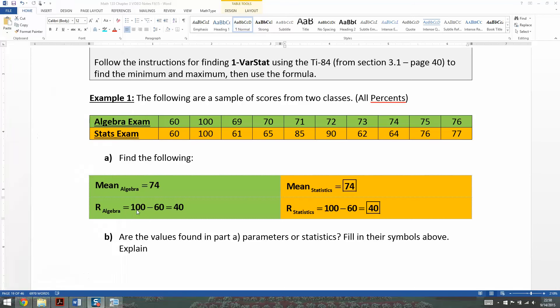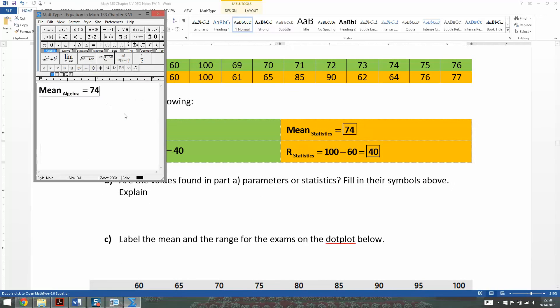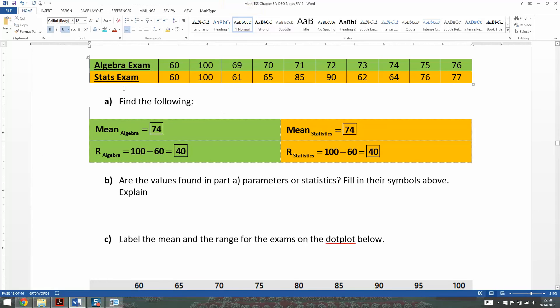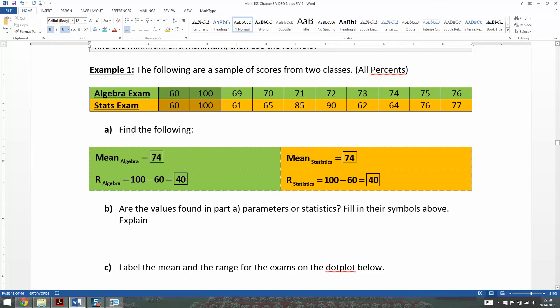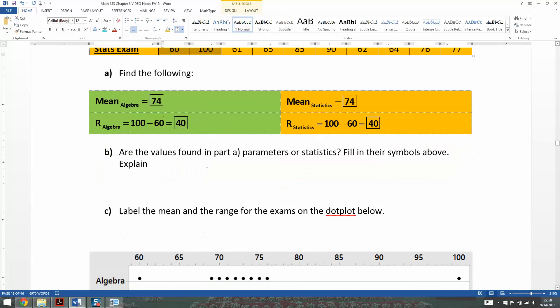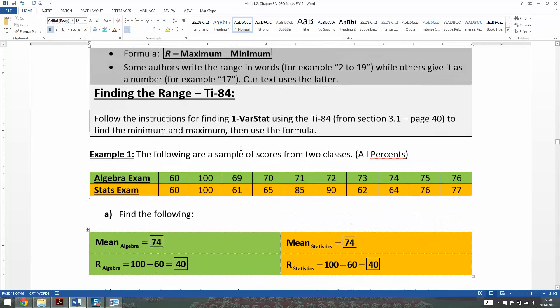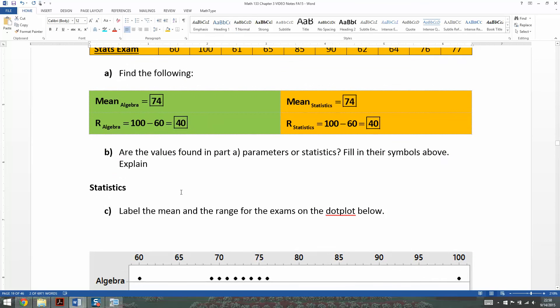Let me type those answers in. It's interesting to note that the algebra exam had the same mean and the same range as the stats exam. I sort of planned it that way. I made them both 60 and 100 to start, setting up the range to be the same. Then I fiddled around with the numbers until the means for the two groups are the same because I'm trying to get at a point. But first, let's talk about whether these are statistics or parameters. They're statistics because these are a sample of scores, not the entire population. So because the data are from a sample.